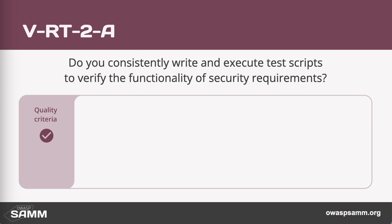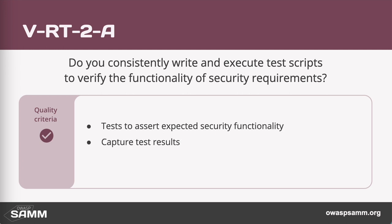At level two, this is where we are looking at scripted and automated testing. Within each application, we are checking to make sure that the security features are working the way that the application needs them to. Test results are getting captured and our tests are built on top of a standardized framework, so you're looking at having a consistent approach across the whole organization when it comes to writing the test cases.